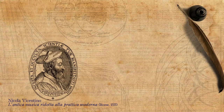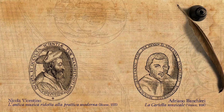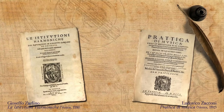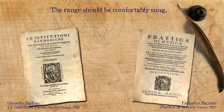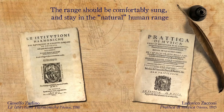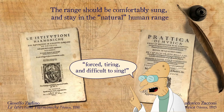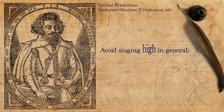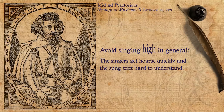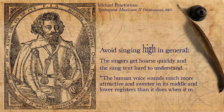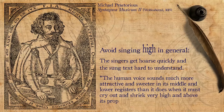Theoreticians such as Vicentino and Banchieri explain that in order to avoid problems of range, one should stay within the staff and avoid ledger lines. Zarlino and Zaccone state that the range should be comfortably sung and stay in the natural human range; otherwise, the outcome would be forced, tiring, and difficult to sing. Praetorius suggested to avoid singing high in general, as this will make the singers get hoarse quickly and the sung text hard to understand. He wrote that the human voice sounds much more attractive and sweeter in its middle and lower registers than when it must cry out and shriek very high and above its proper limits.